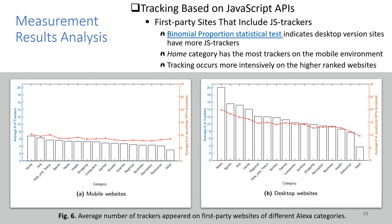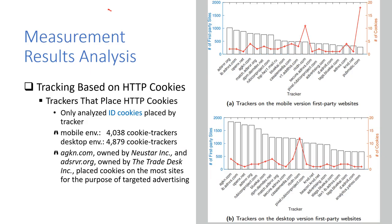Now let's check some facts from the perspective of first-party websites. We did a binomial proportion test, and the result indicates that desktop version websites are more likely to have more JS trackers. Also, home category websites on the mobile environment have the most trackers, while news category websites on the desktop environment have the most trackers. We also found that tracking occurs more intensively on higher-ranked websites for both environments. Now let's talk about cookie trackers — in this part we only analyzed ID cookies placed by them, which are cookies that can be used to track web users.